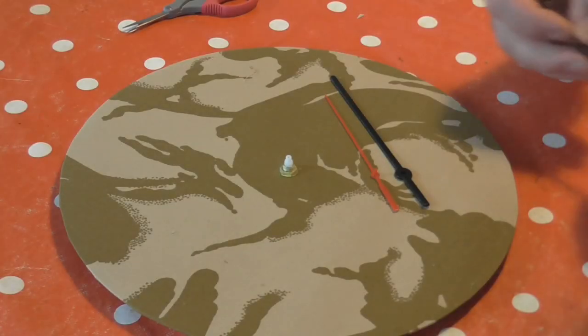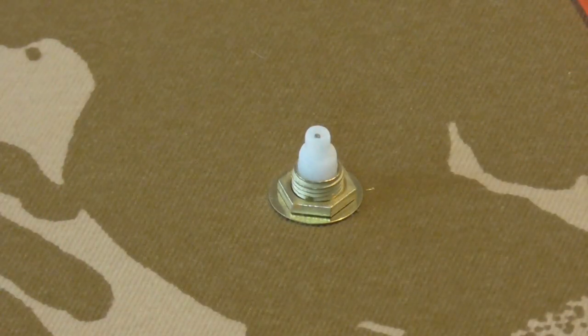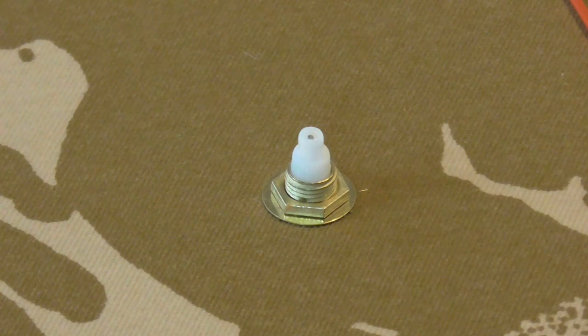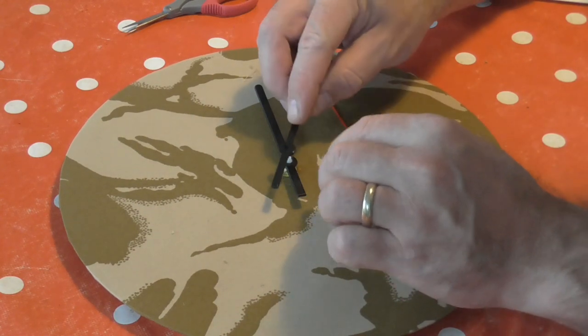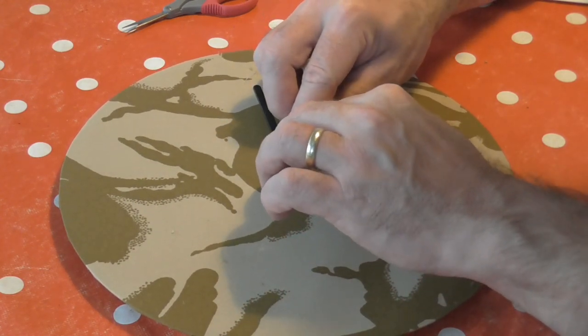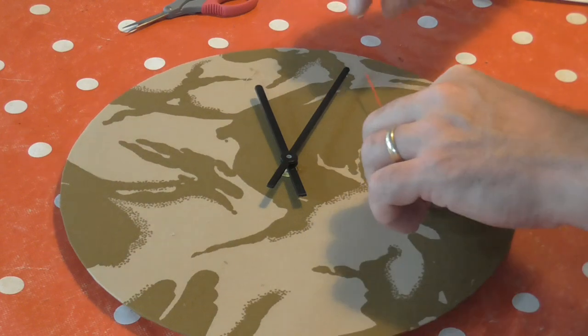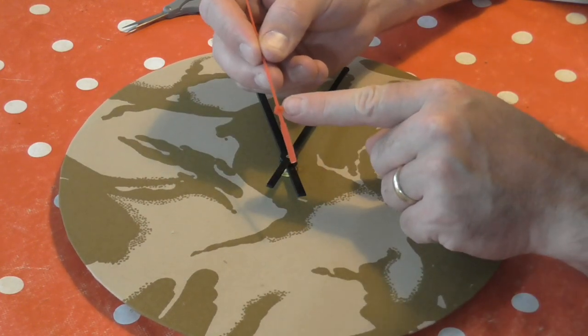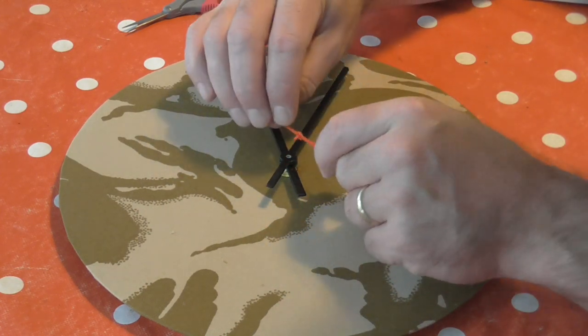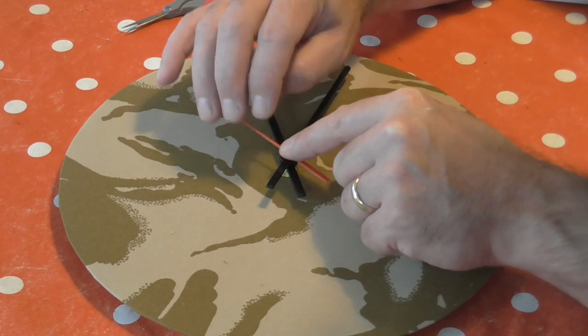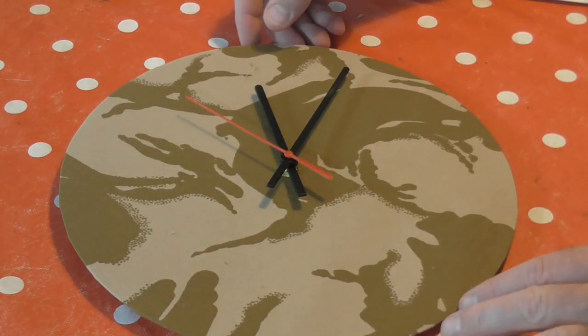Okay, almost there. Now it's time to fit the hands. So the first hand that goes on is the hour hand. It's got a slightly bigger hole and goes over the larger ring of the mechanism. Then set your minute hand. There's a smaller hole and goes over the smaller section. Funny that. And then finally, the second hand has a small spindle which goes over a small needle-like protrusion in the middle. Just push that on firmly. And there you have it.